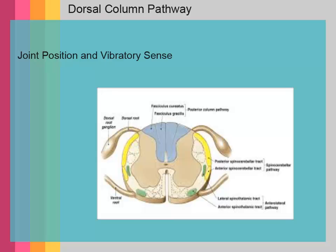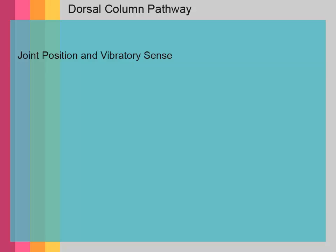This slide emphasizes how modalities of vibratory and joint position sense are transmitted into the nervous system — again with their cell bodies in the dorsal ganglia — but with their axonal projections going up the two posterior column tracts. They don't make any synapses until they reach the brainstem at the nuclei for both the gracilis and cuneatus.